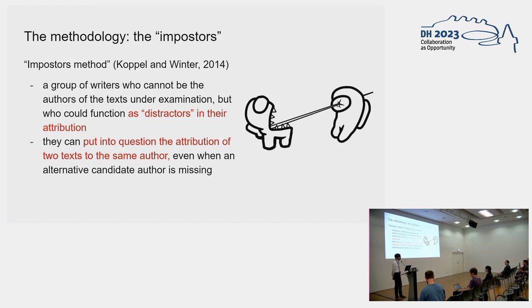The methodology we decided to use is quite well known but also quite disputed. It's known as the imposters method. The idea is to have a group of writers who cannot be the authors of the text under examination. We know they are not either Marut or Traven, but they can function as distractors in the attribution by trying to put themselves in the middle, working as a confounding factor.